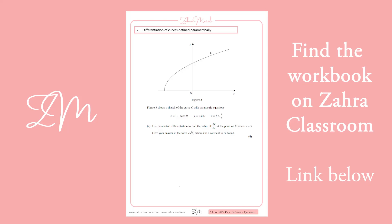Okay, so now we're going to look at differentiating curves parametrically. Right, so we've got x equals 1 minus 8 cos 2t. So we're going to differentiate each of them separately.